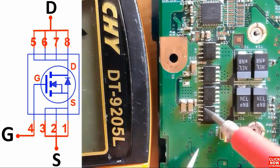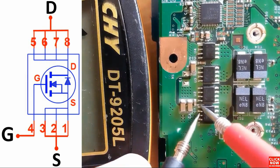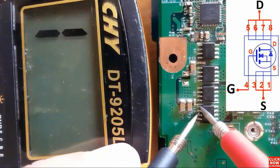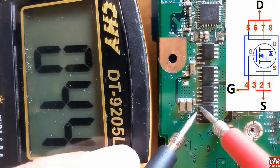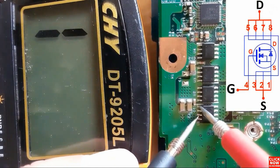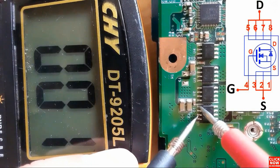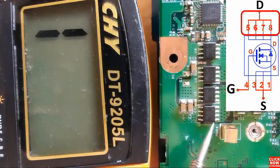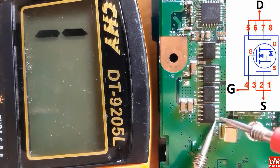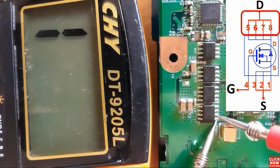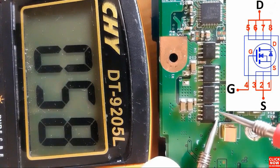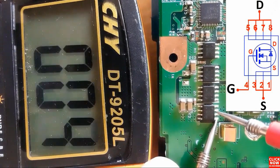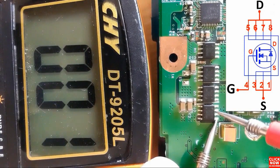Now let's check these MOSFETs using the same working principle. Let's check the source — these three pins should be connected together. As you can see in the multimeter, we have a low resistance. The three pins are connected together. These four drain pins should also be connected together. As you can see in the schematic, we get a low resistance in the multimeter, meaning the four pins are connected together.